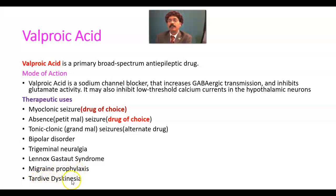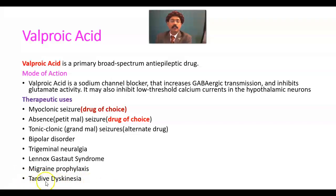Tardive dyskinesia — this is an involuntary movement involving grimacing, protruding tongue, lip smacking, and some Parkinson-like features. Tardive dyskinesia may be a complication of some neuroleptic or other anti-emetic drugs. So this adverse effect of certain drugs can be managed by valproic acid.